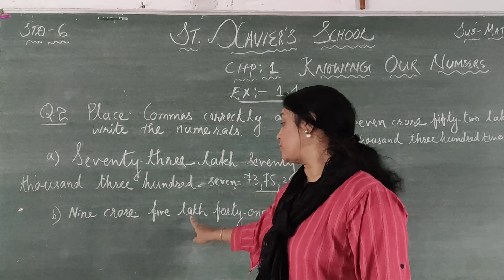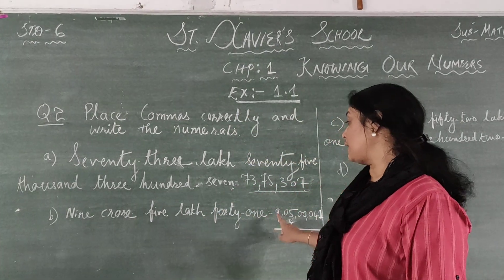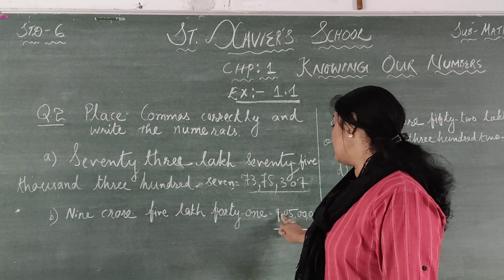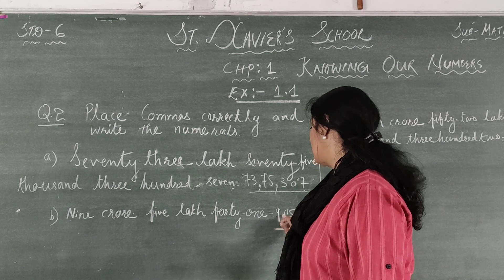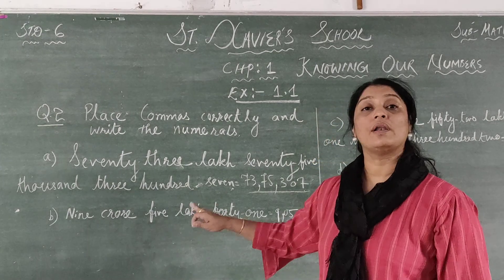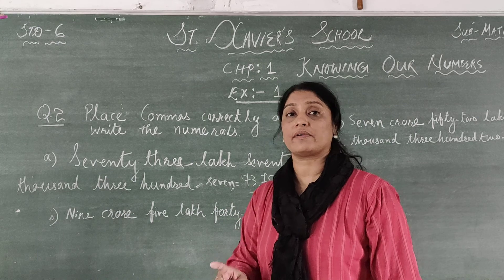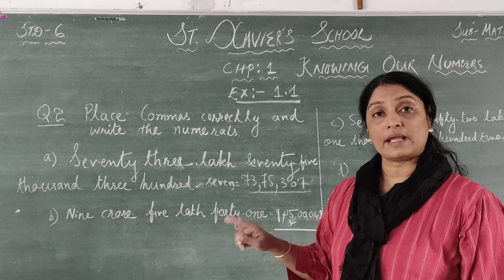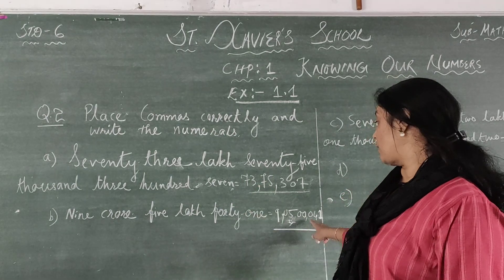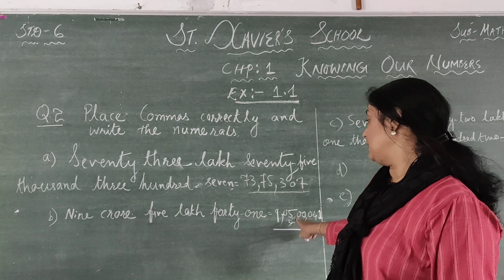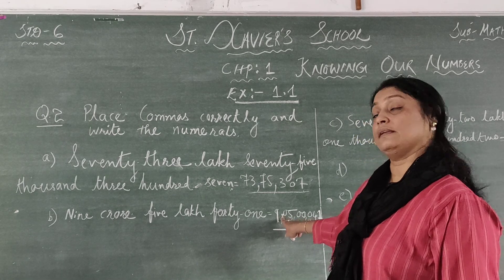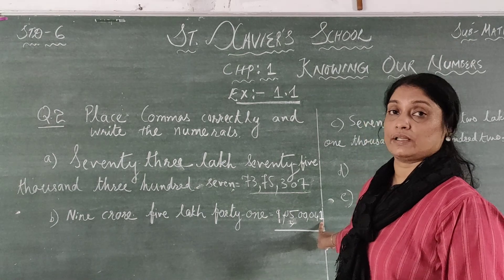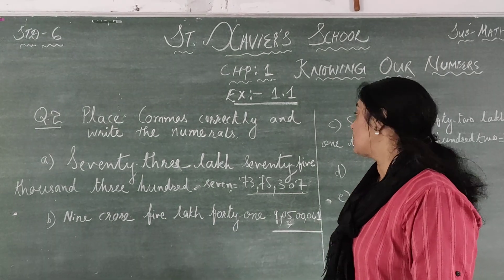Part B: 9 crore, 5 lakh, 41. After 9 crore we place a comma. Then 5 lakh. Since nothing is given in between, you write zeros — 0, 0, 0 — then 41. The comma comes after the hundreds place, then after every two digits going left: after 100, then after 9. So the answer is 9,05,00,041.